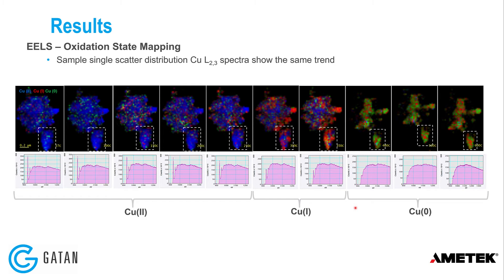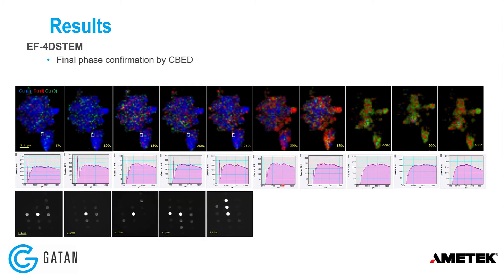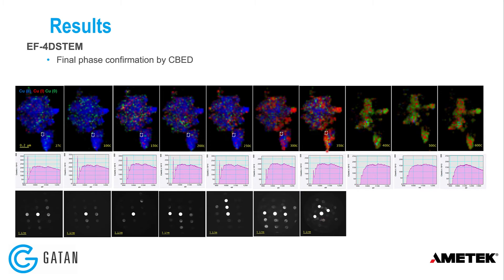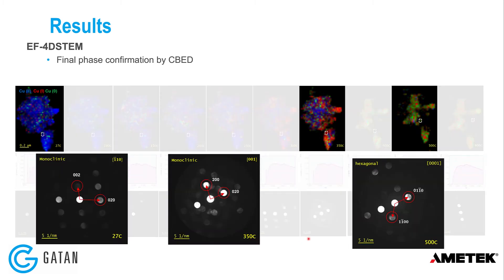As a final validation, phase confirmation is done by CBED. Convergent diffraction patterns extracted from sub-regions of the 4D STEM data fall into three main groupings. The first five patterns look similar; the next two at 300 and 350 Celsius look slightly different; and the final three at highest temperatures look different again. The room temperature pattern is characteristic of monoclinic copper(II) oxide in a 110 zone axis orientation. At 350 Celsius it remains monoclinic but in a 001 zone axis orientation due to crystal rotation. At higher temperatures, pure metal regions show copper metal in a hexagonal phase.